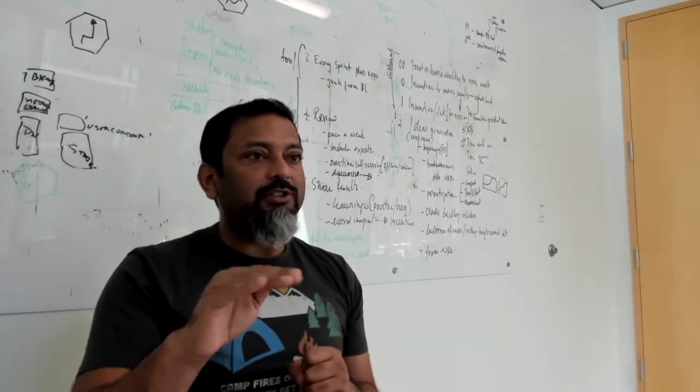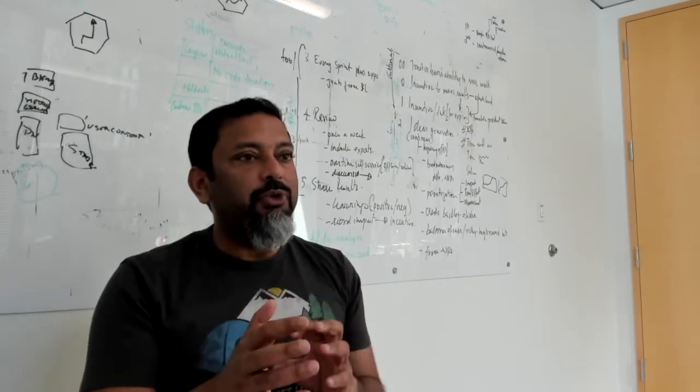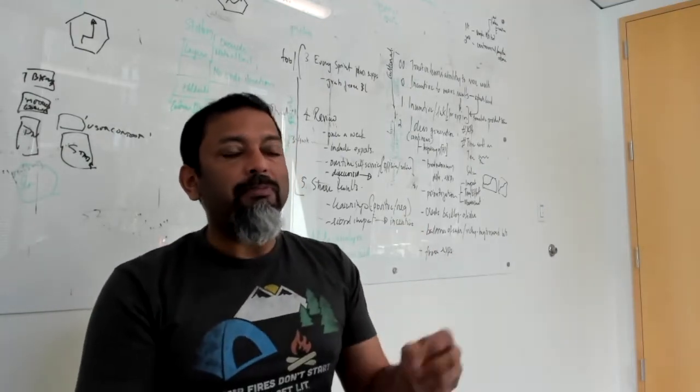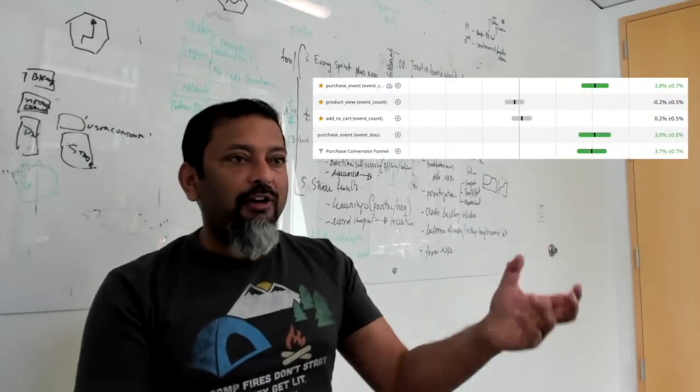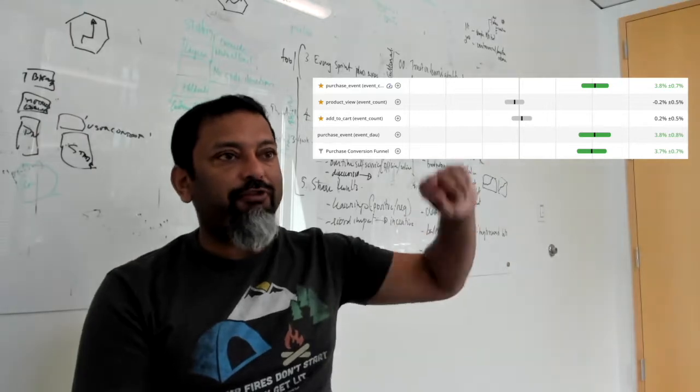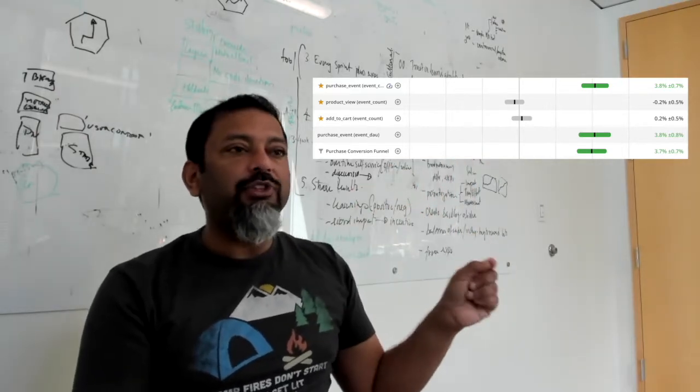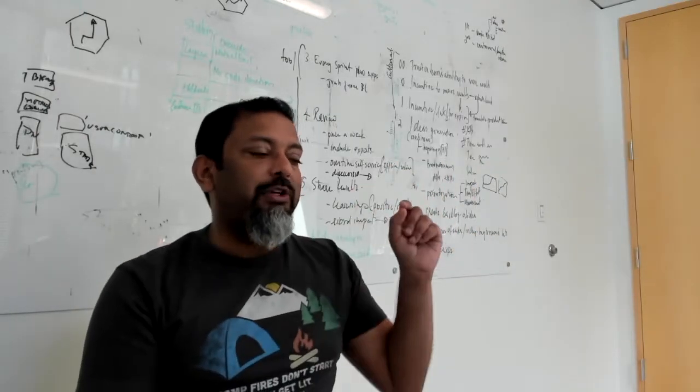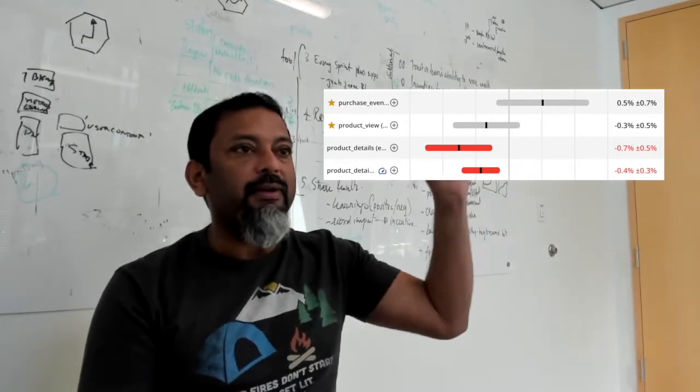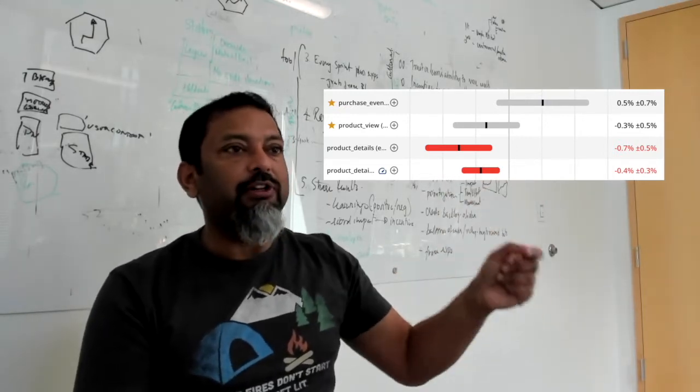But when they sliced results by different classes of users, they saw something unexpected. New users, people that were new to Tavur, loved and reacted really well to the vertical feed. People that had been using Tavur for a while sometimes saw the number of purchases they made dropping when we switched them to a vertical feed.